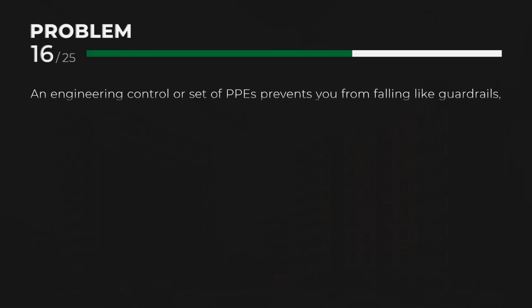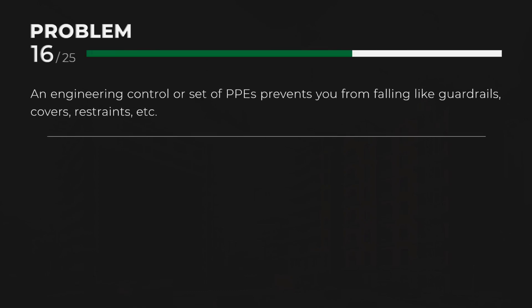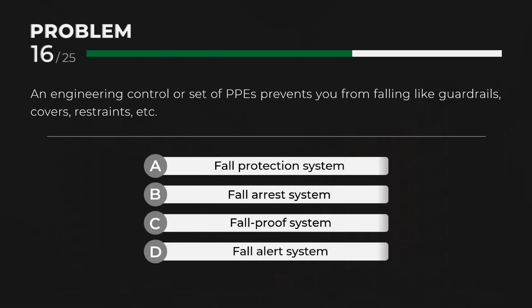A. Fall Protection System — An engineering control or set of personal protective equipment that prevents you from falling, such as guardrails, covers, restraints, etc.